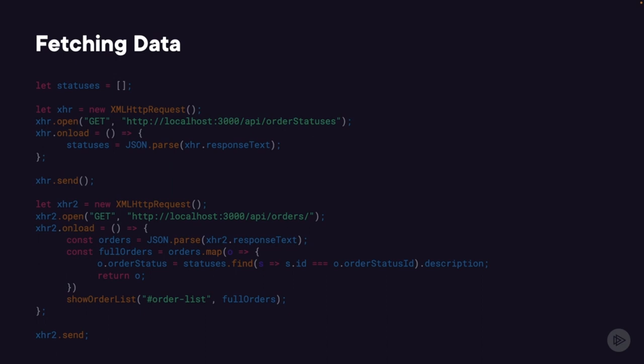The code on screen makes two separate HTTP requests. The first is to get order statuses and the second is to get a list of orders. This block of code might not be something you see every day, so let's walk through some of the high points. It starts by creating a new XMLHttpRequest object, which allows us to make requests against an API.